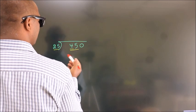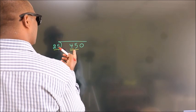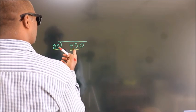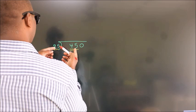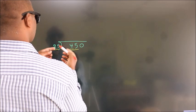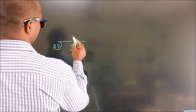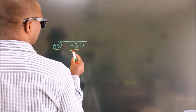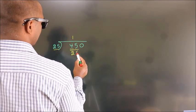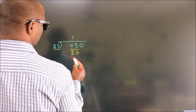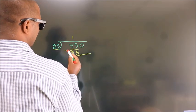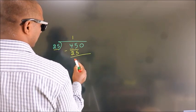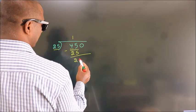45. A number close to 45 — in the 25 table, 25 once is 25. Now we subtract, we get 20.